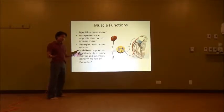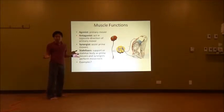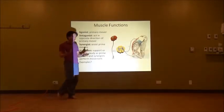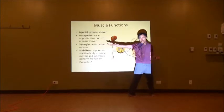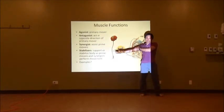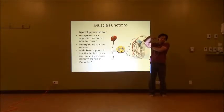The agonist is trying to do something. The antagonist is trying to not let it happen. In a joint, we can see that: one muscle — the agonist — is trying to move this joint one way, and there's another muscle behind it resisting. That's called the antagonist.